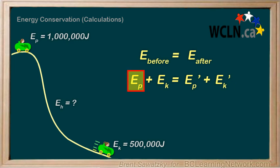The potential energy, E_P, equals one million joules, we're told. The kinetic energy, E_K, at the top is zero. It hasn't started rolling yet.